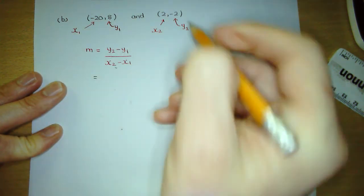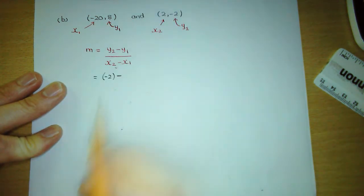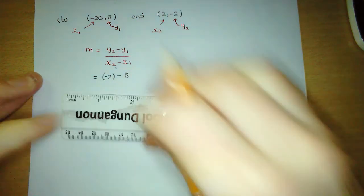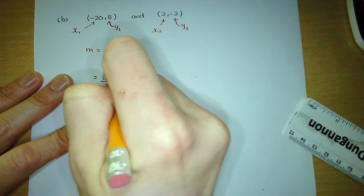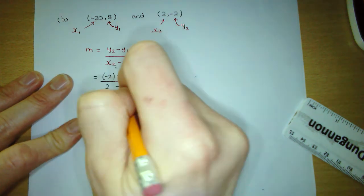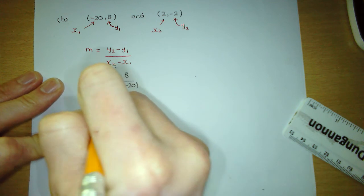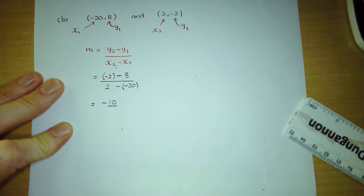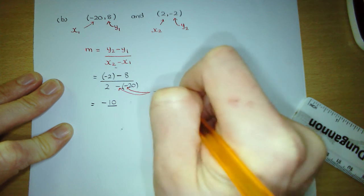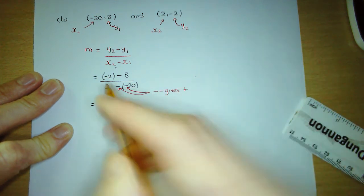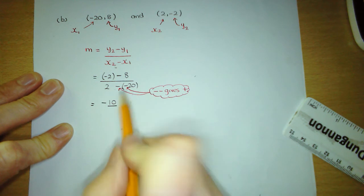Substitute the values. y2 is negative 2 — put it in brackets because we're subbing in a negative. Copy down the minus in the formula. y1 is 8, just replacing y1 with 8. That's all over. x2 is 2. Copy down the minus in the formula. x1 is minus 20 — put it in brackets because we're subbing in a negative. Tidying up: the top line is minus 2 subtract 8, which is negative 10. On the bottom line, two minuses side by side combine to give a single plus — same signs give a plus, different signs give a minus. So the bottom line is 2 plus 20, which gives us 22.